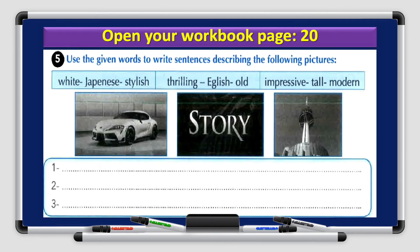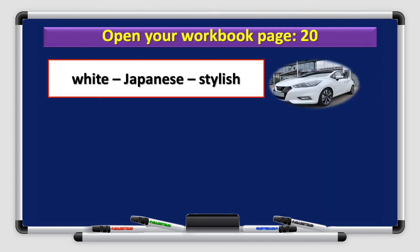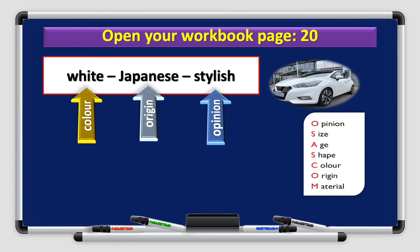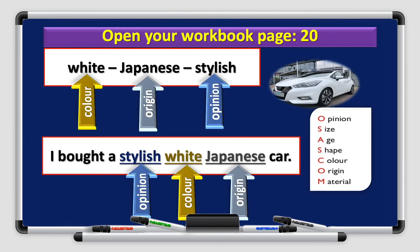Let's complete a task that you can find in your workbook page 20. The task tells you to use the given words to write sentences by describing the following pictures. Let's look at number one. You have a picture of a car. And you have adjectives like white, Japanese, and stylish. So white is a color, Japanese is origin, and stylish is an opinion. I start with opinion, followed by the color, followed by the origin. So, a good sentence would be, I bought a stylish white Japanese car.